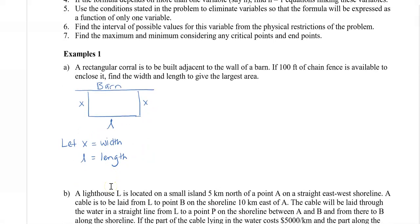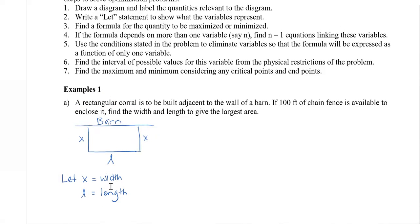There's a restriction: we only have 100 feet of chain fence. Looking at the picture, if there were no length, x would be 50 to represent both sides. If the length were the full 100 feet, x would have to be zero. So the interval for x is [0, 50]. Next we relate x and l and maximize the area to get the largest enclosure.